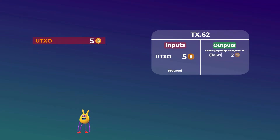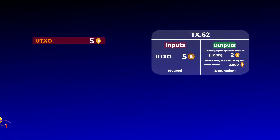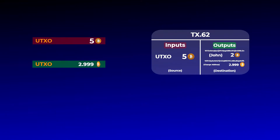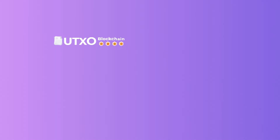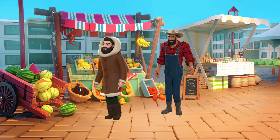What happens is your five-bitcoin UTXO will be used, and then two outputs will be created from this transaction: one output to John for two bitcoins, and another for 2.999 bitcoins to return the excess amount to a new address that your wallet controls. This address is called a change address, and this output is known as the change output. This new change address is fully yours, and you can use this change UTXO in a new transaction. You may have noticed that the sum of the two outputs doesn't equal five bitcoins — that's to account for the transaction fee paid to miners, which we assumed was 0.001 bitcoins.